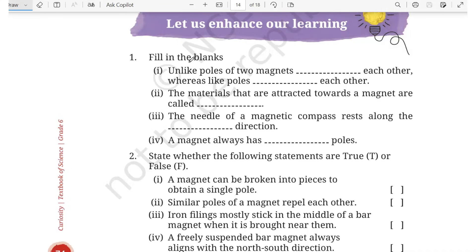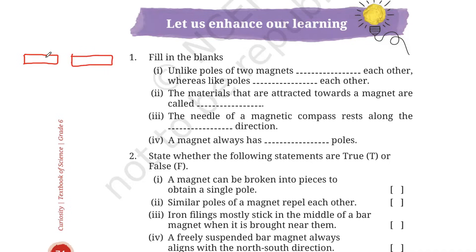The first question is fill in the blanks. Number 1: unlike poles of two magnets dash each other. Suppose we have two magnets, this is one magnet and this is another magnet. Every magnet has two poles, North Pole and South Pole. If you bring unlike poles together, that means South Pole and North Pole together, what will happen? They will show attraction. So the answer to the first question is unlike poles of two magnets attract each other.